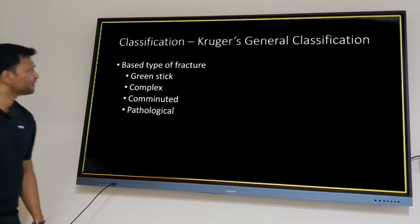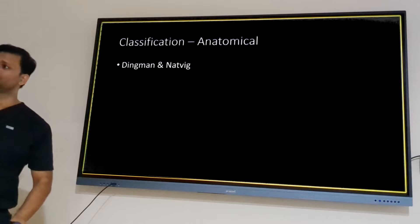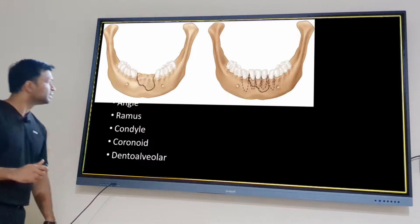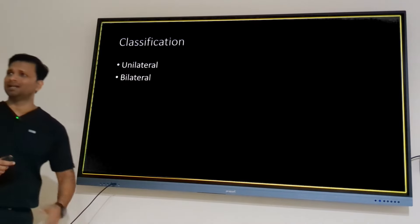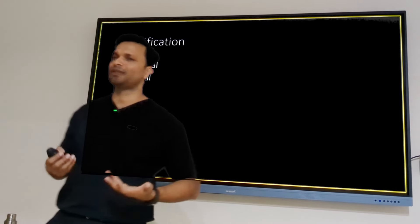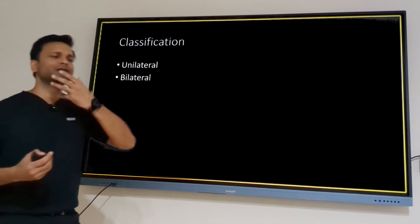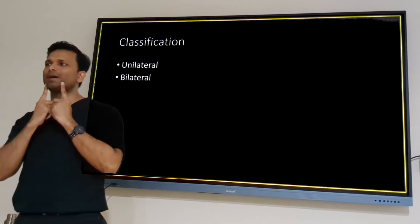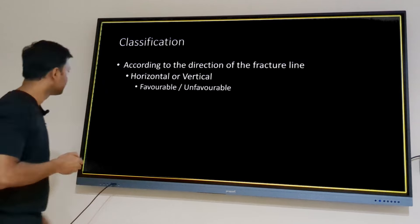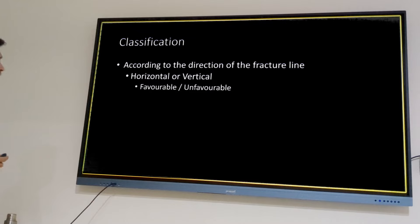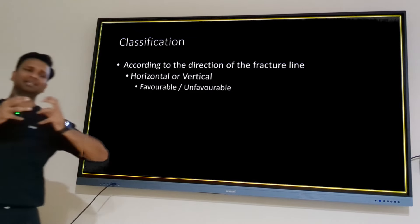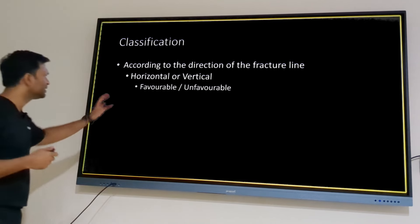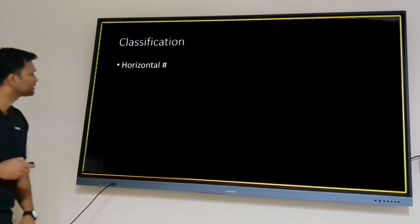After Kruger's general classification, the anatomical classification is by Dingman and Natwig, already explained. Then there is unilateral versus bilateral — we have seen bilateral parasymphysis fractures with bilateral condyle fractures. The favorable versus unfavorable classification depends on displacement and ease of reduction, and includes horizontal and vertical subtypes.